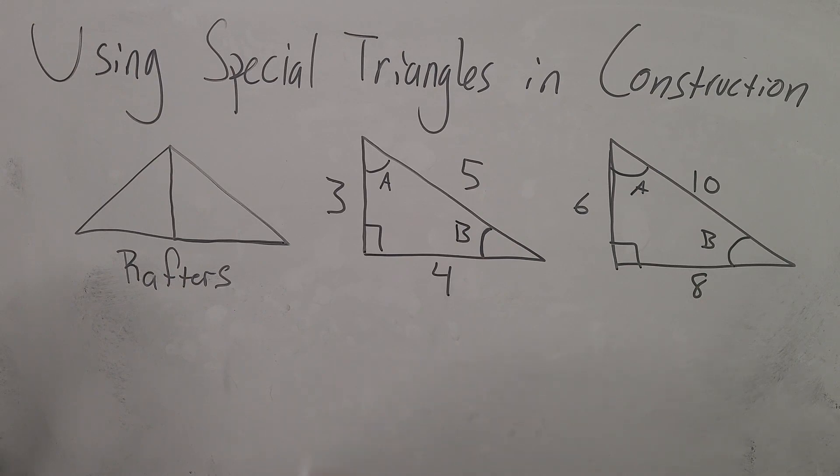For example, we have the 45-45 triangle where we know these two measurements are 45 degrees. It's a right triangle. If we double that, assuming that we have a perfectly symmetrical roof, which I assume most people are going to want...